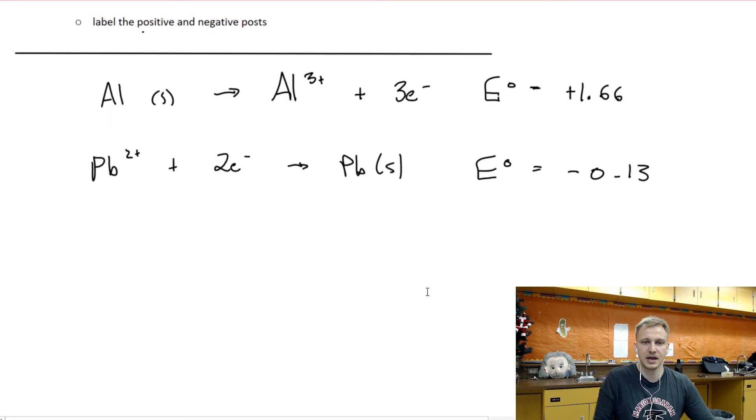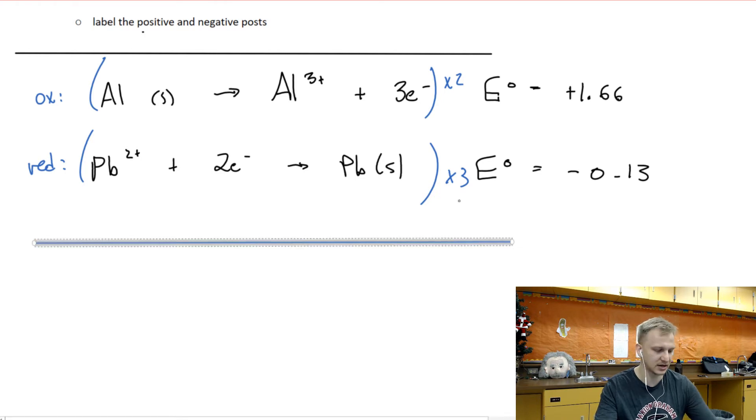So another problem that we have here is we have three electrons being released in our oxidation reaction. We have three electrons being released in our oxidation reaction. We only have two in our reduction. So what we need to do is multiply this entire thing by three and multiply this entire thing by two. You can think about it as like getting the, quote unquote, common denominator or the lowest common factor, I think is the term that they used back in grade three.